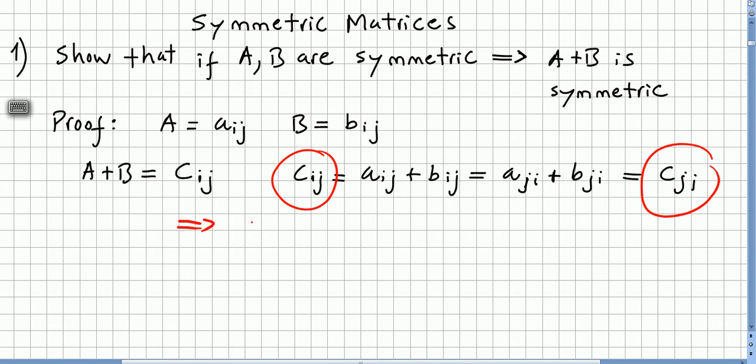So this means that C is A plus B, A plus B is symmetric, because this is a definition of a symmetric matrix, and that concludes the proof.